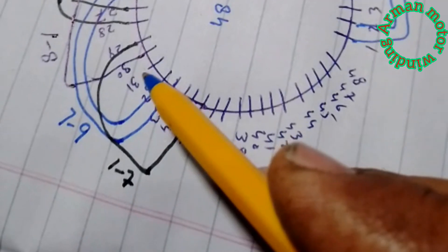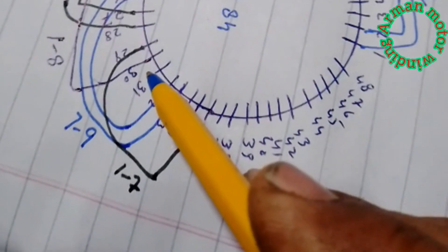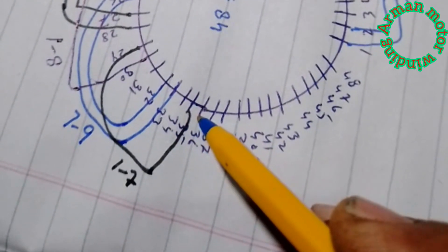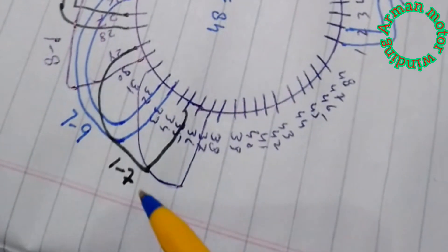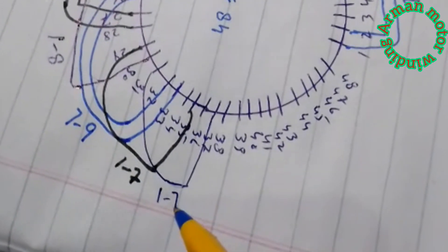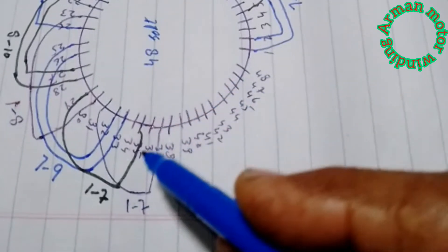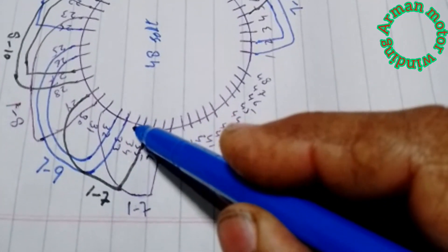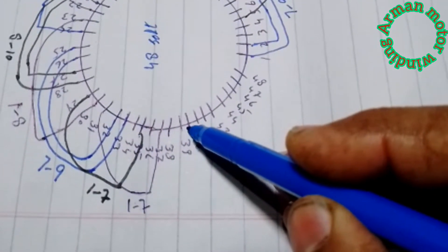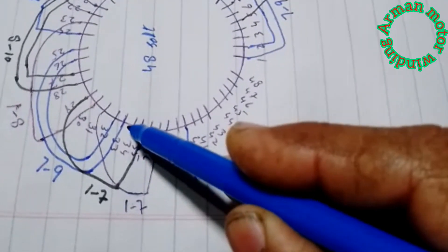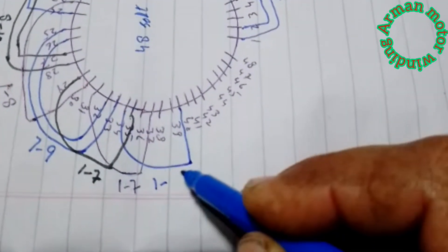We will put a set in 1, 2, 3, 4, 5, 6, 7. We will put a set in 1, 2, 3, 4, 5, 6, 7. 1, 2, 3, 4, 5, 6, 7. I will put a set in 1, 2, 3, 4, 5, 6, 7. 1, 2, 4, 5, 6, 7.